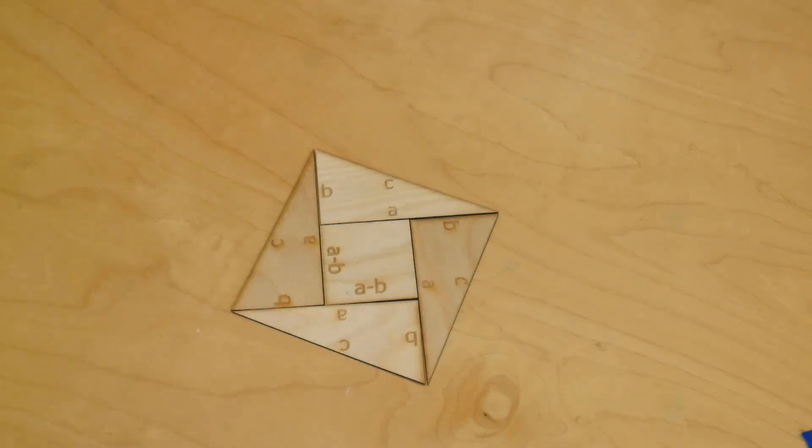Now, I cut these pieces out of thin aircraft-grade plywood using a CNC laser. But you can do it just as well with paper and scissors. A piece of graph paper works fine, too. And you'll find out, if you make a couple different sizes, it really doesn't matter what a, b, and c are. You can always get a square as long as a, b, and c really do form a right triangle.